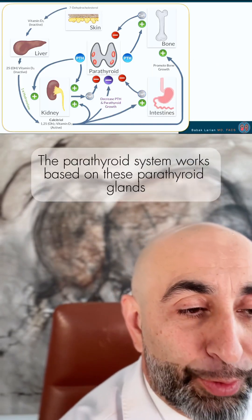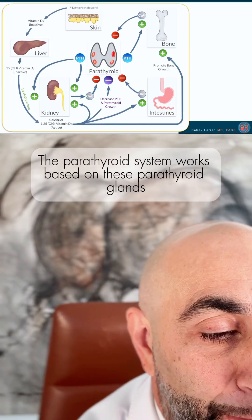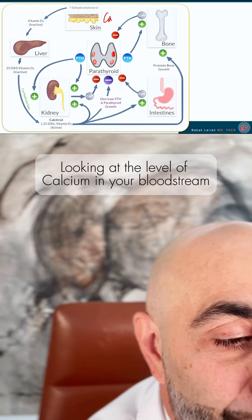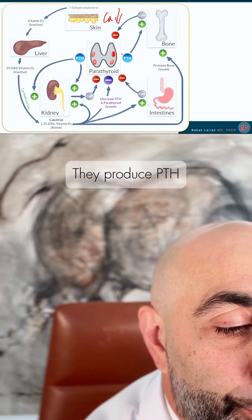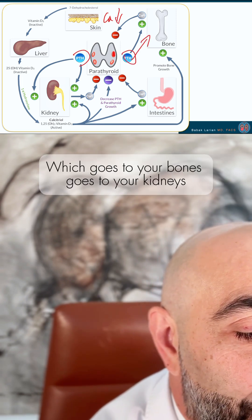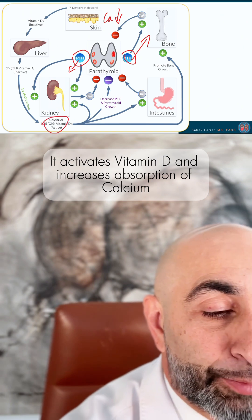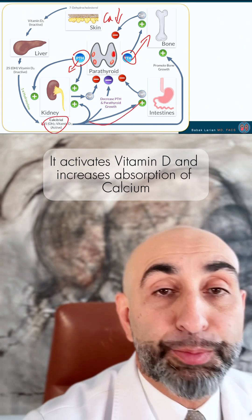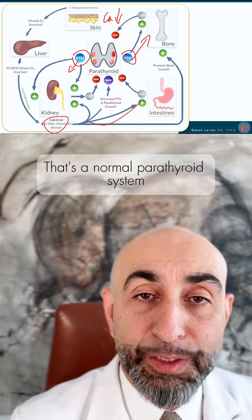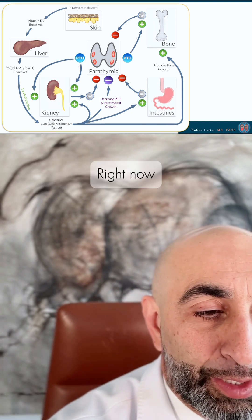As you know, the parathyroid system works based on these parathyroid glands looking at the level of calcium in your bloodstream. If the calcium is low, they produce PTH, which goes to your bones, goes to your kidneys, activates vitamin D, and increases absorption of calcium. That's how the calcium level comes up — that's a normal parathyroid system.